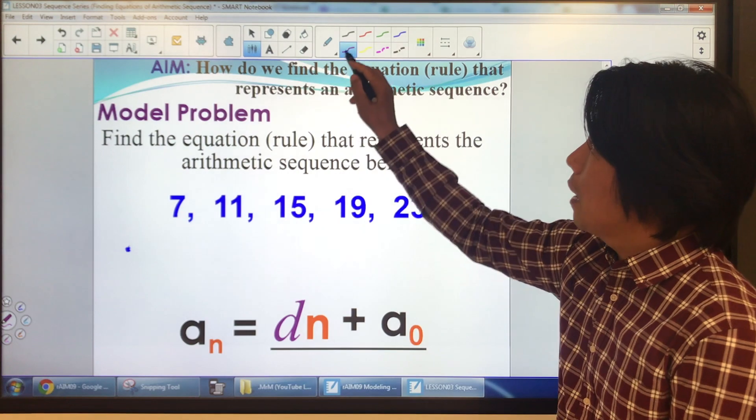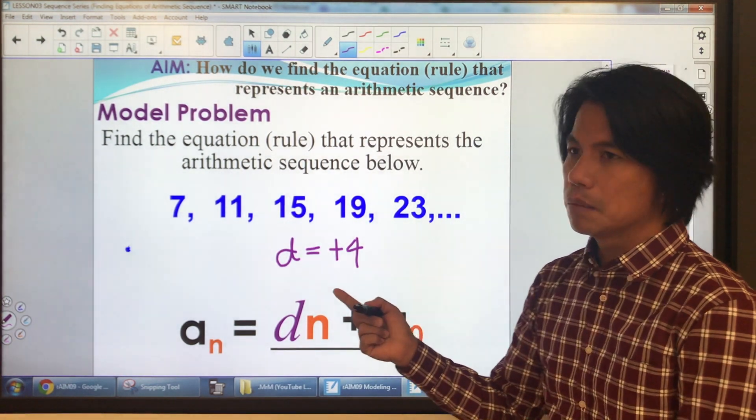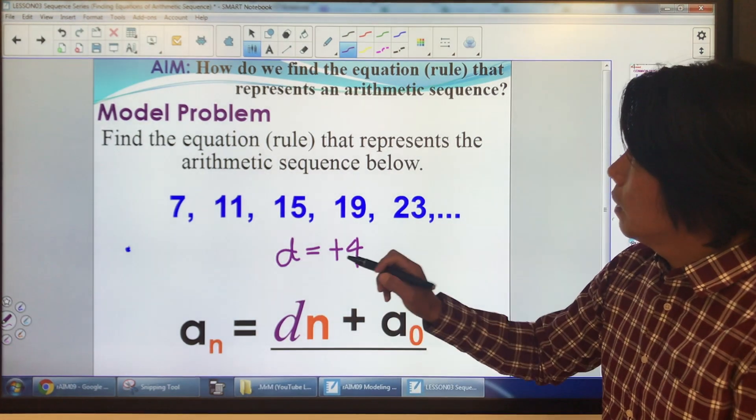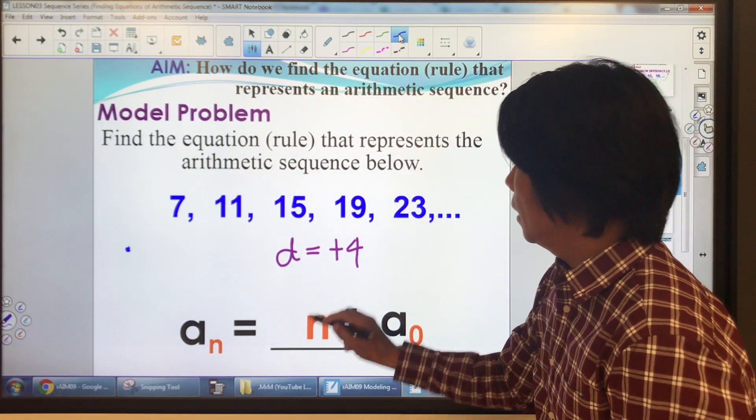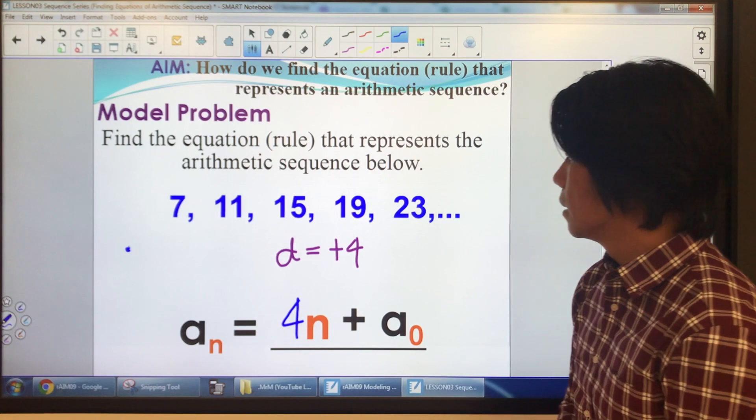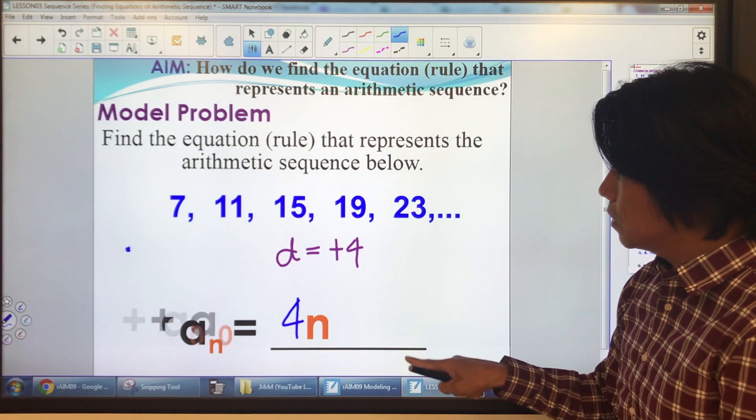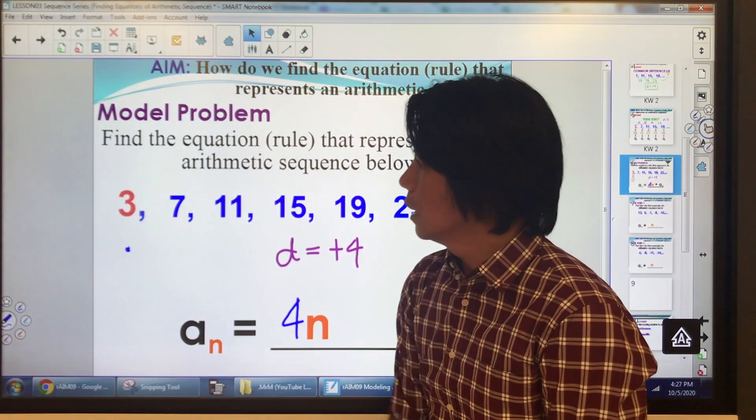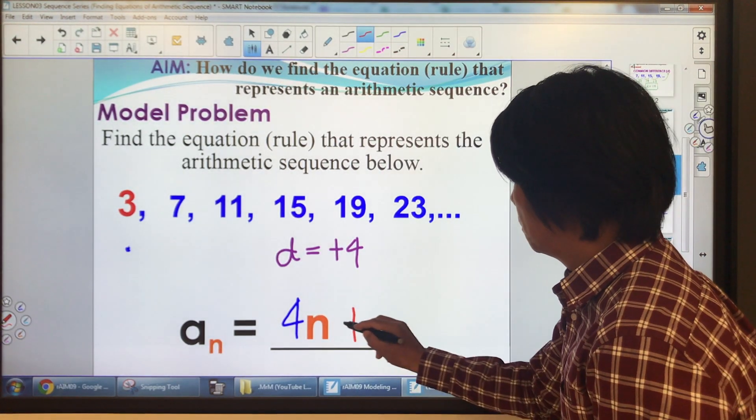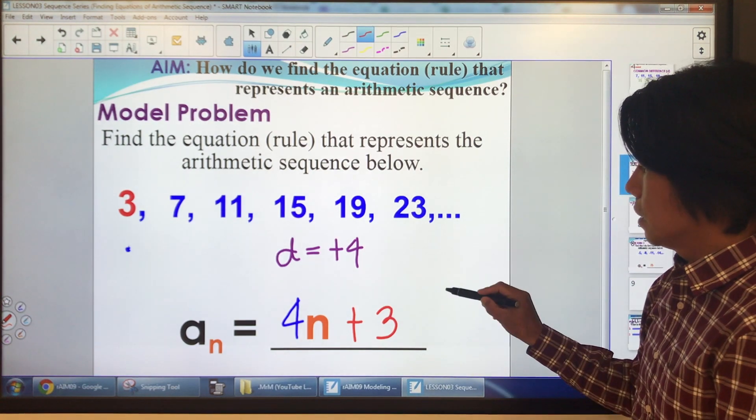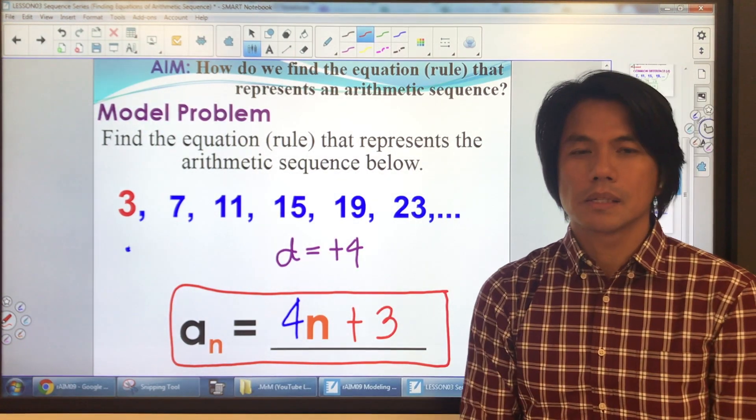Remember the sequence? We found out that the common difference of this is positive 4, since it's an arithmetic sequence, right? So, you just simply change this D to positive 4, right here, next to the N. Now, find the A sub 0. A sub 0 is your 0 term, and we already know that it's positive 3. So, you just simply put plus 3 to this equation, and that is the rule that governs, or that represents this arithmetic sequence.